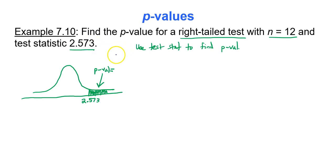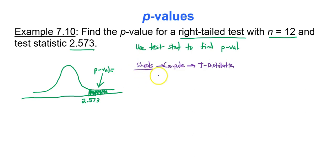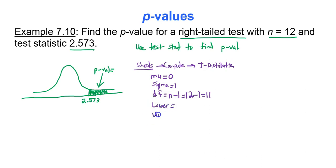Jump into Google Sheets, go to the compute tab, and go to the t-distribution region. You'll type in mu equals 0 and sigma equals 1. You'll also type in degrees of freedom — the t-distribution uses degrees of freedom, which is sample size minus 1, so 12 minus 1 is 11. Then enter your lower bound and upper bound. Since you're finding the area under the curve for the right tail, the lower bound is 2.573 and the upper bound is 6 nines.